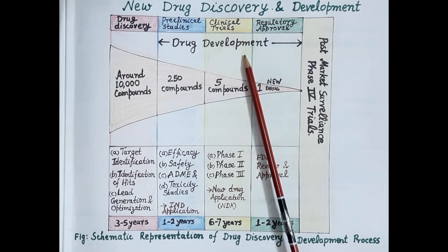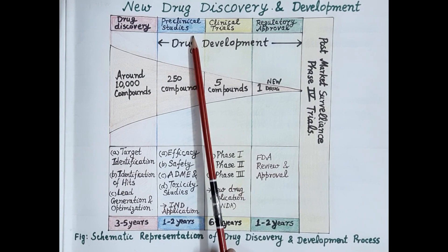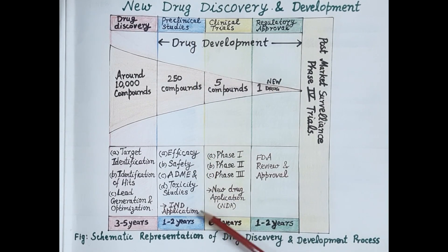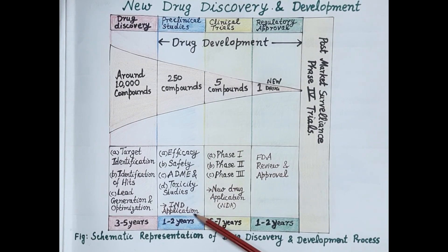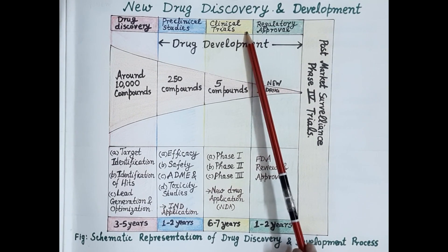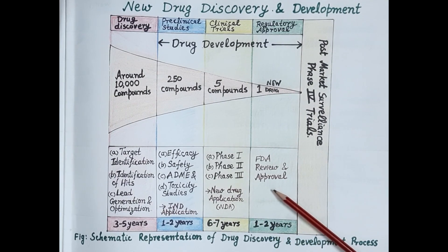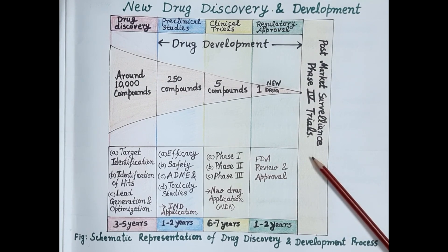Stages of new drug development include preclinical studies, where optimized lead compounds are screened in animals. Data obtained from these preclinical studies is compiled in an Investigational New Drug (IND) application, which is submitted to the FDA for review. If approval is granted, clinical trials are carried out in human beings, and data is compiled in a New Drug Application (NDA), submitted again to the FDA. If approved, the drug is manufactured at large scale and marketed, followed by post-market surveillance or Phase 4 trials.